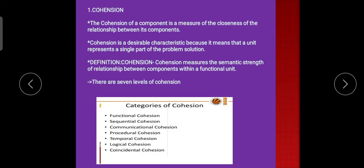Cohesion. The cohesion of a component is a measure of the closeness of the relationship between its components. Cohesion is a desirable characteristic because it means that a unit represents a single part of the problem solution. Cohesion measures the semantic strength of relationship between components within a functional unit. There are seven levels of cohesion.